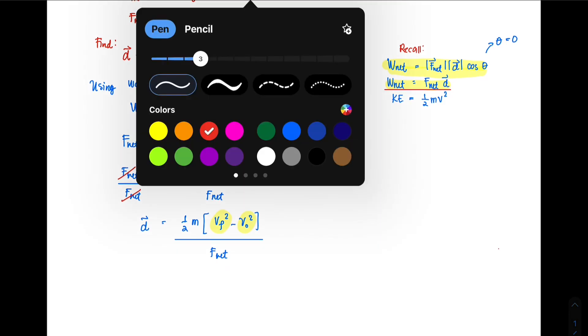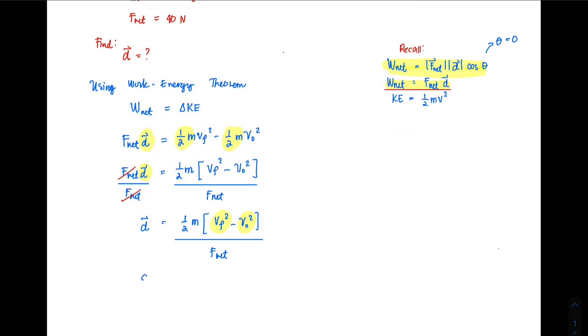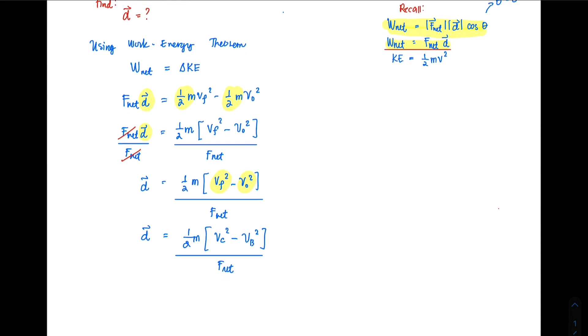For the displacement, d equals (1/2)·m·(v_c² - v_b²)/F_net. You simply replace it with the appropriate velocities and then divide it by the applied force or the net force.